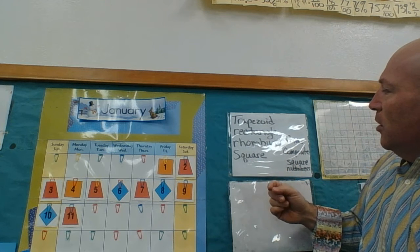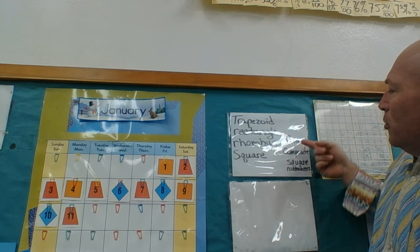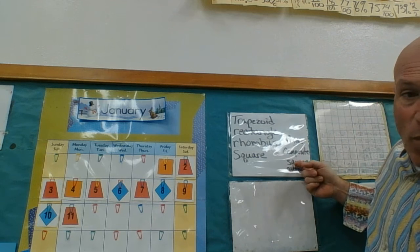Now these are all geometrical shapes. We also have some types of numbers. We have prime numbers, composite numbers, and square numbers.